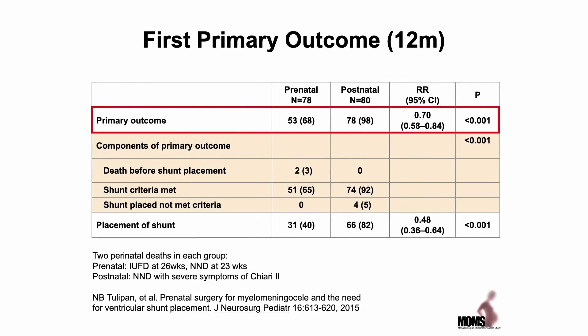The primary outcome was shunt placement, and for this criterion there is a statistically significant difference between patients who had prenatal versus postnatal closure. The primary outcome was determined by pre-specified criteria by a blinded group of investigators who examined patients' imaging studies and determined whether they met shunt criteria. The actual placement of a shunt was reduced in the prenatal group — 40% compared to 82% — and that difference was also statistically significant.